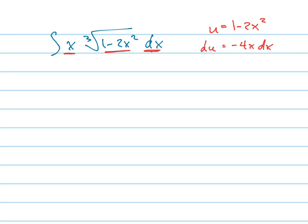Notice that I have x dx here, so I'm going to solve this for x dx. Negative 1 fourth du is x dx.